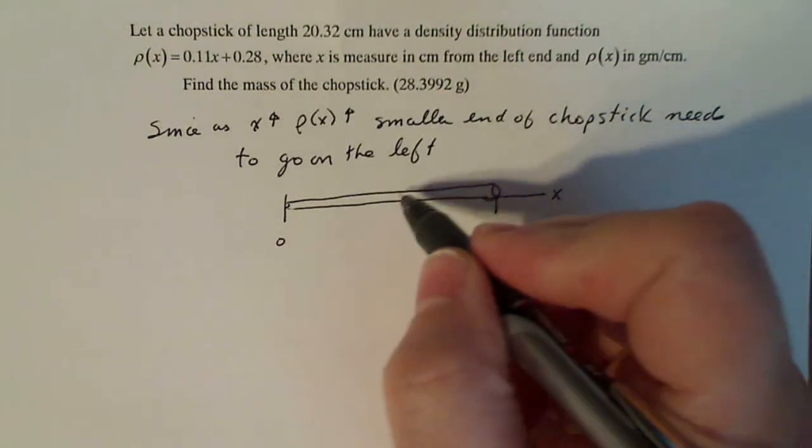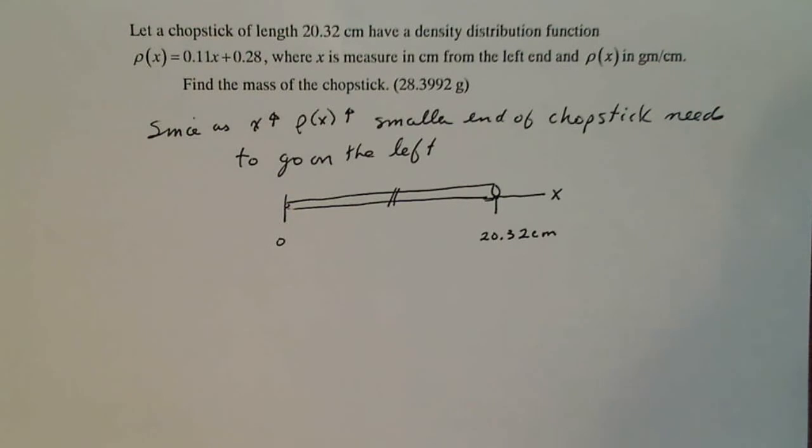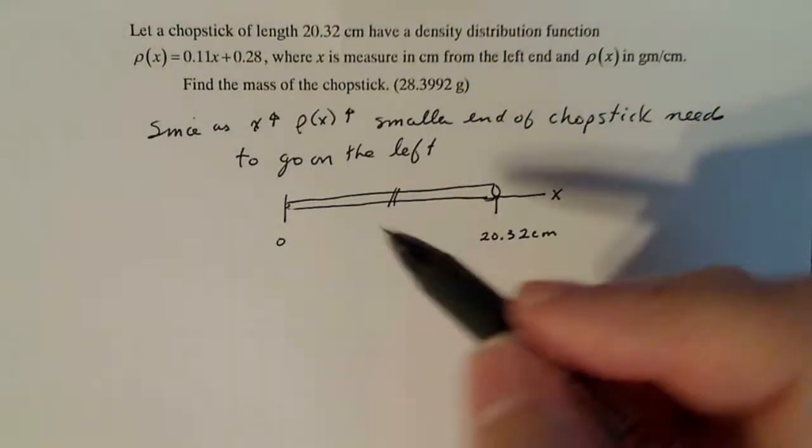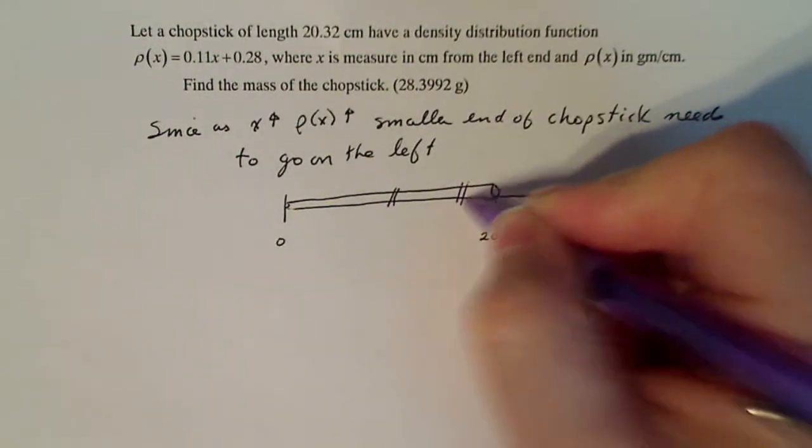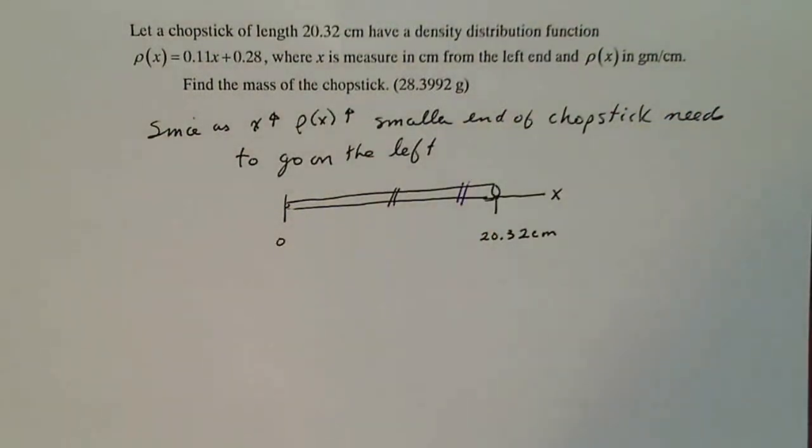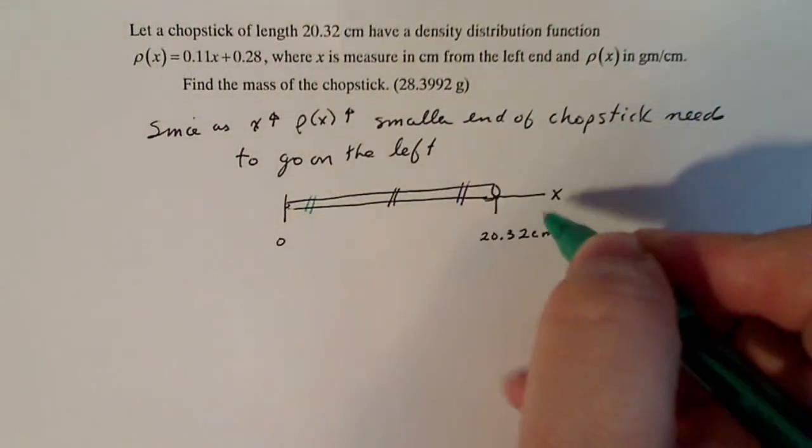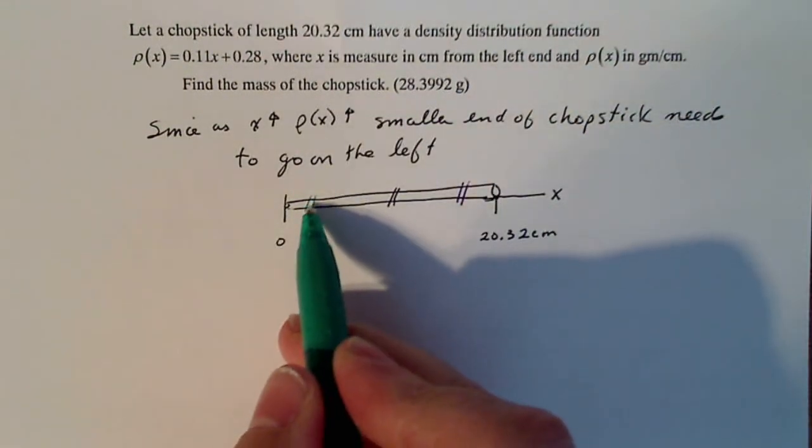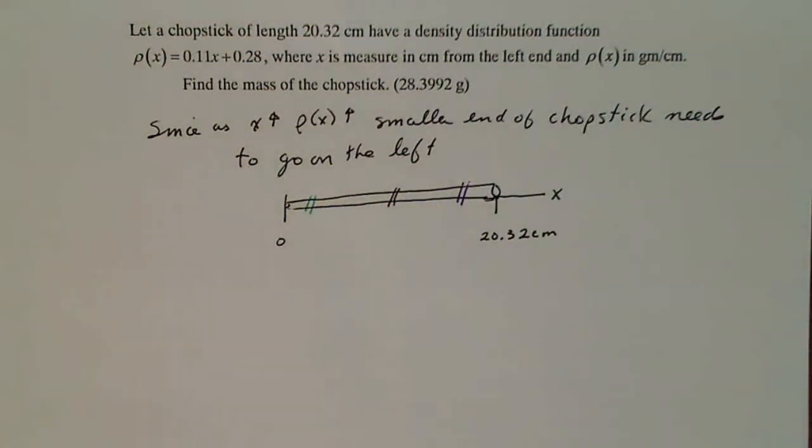So I'm going to slice up my chopstick so that every slice that I make has about the same amount of density. You know that if they're pretty thin slices, then each of these slices will have about the same density - not from each other, but that slice will have its own density, that slice will have its own density, et cetera.